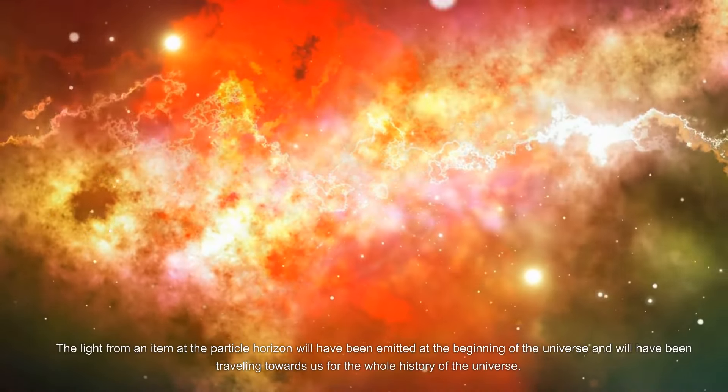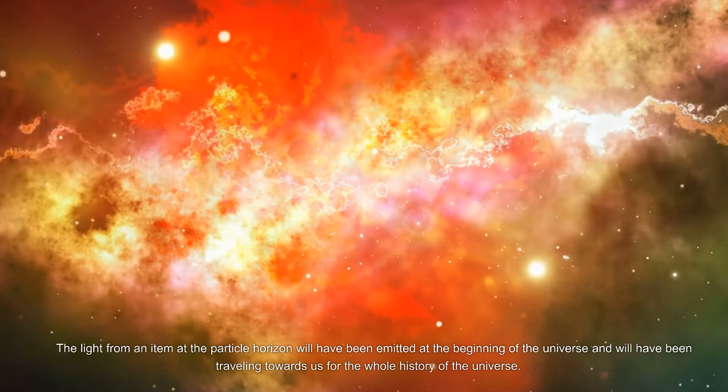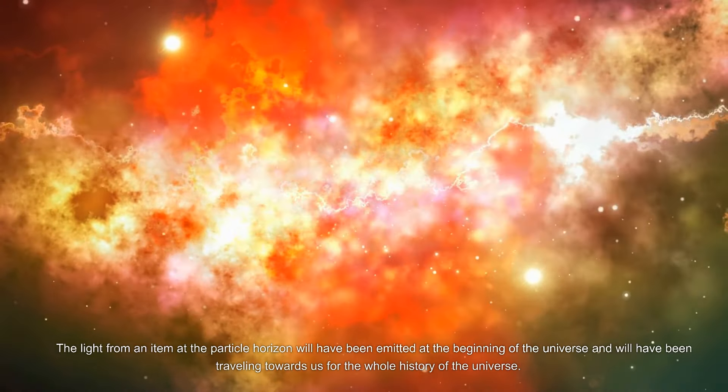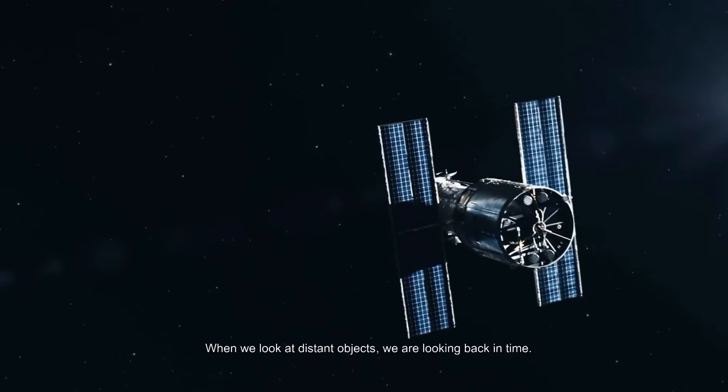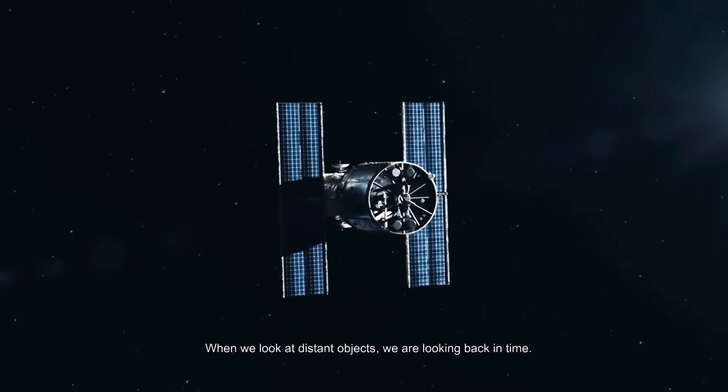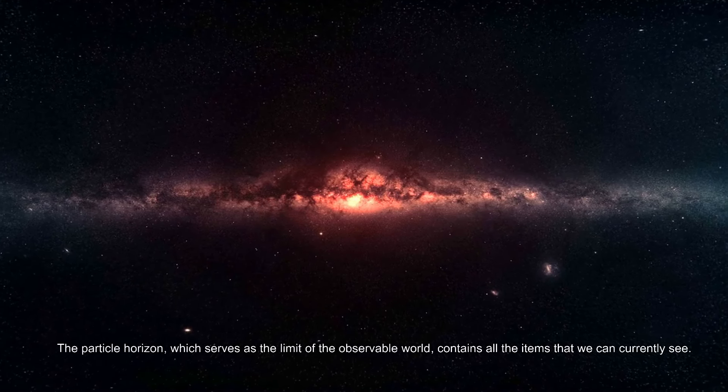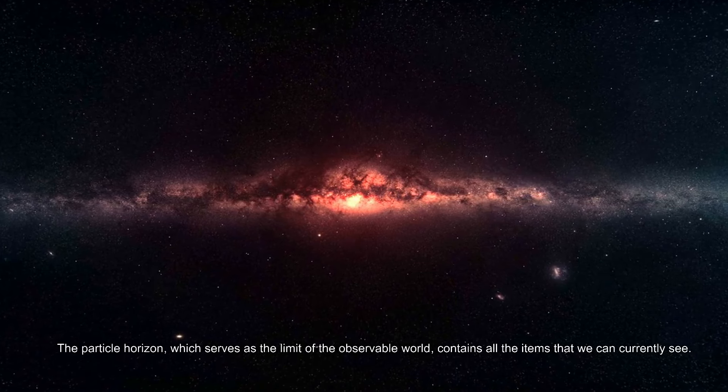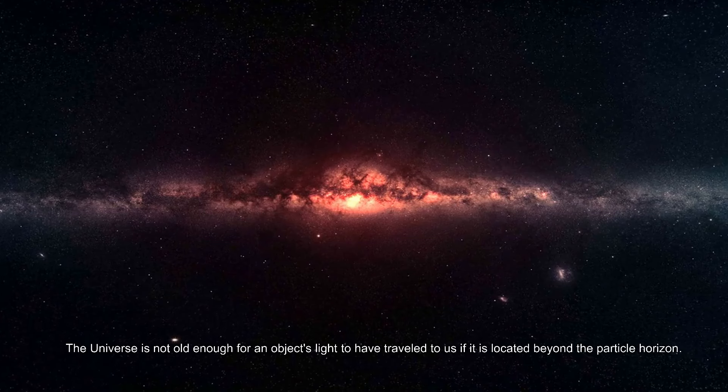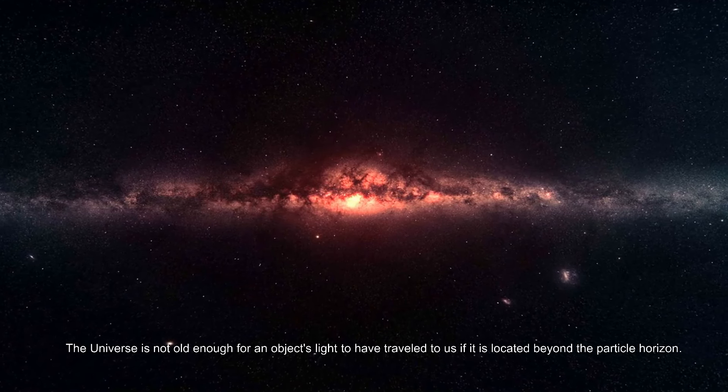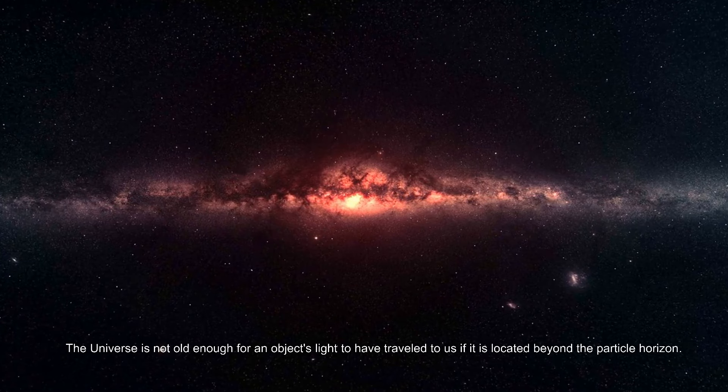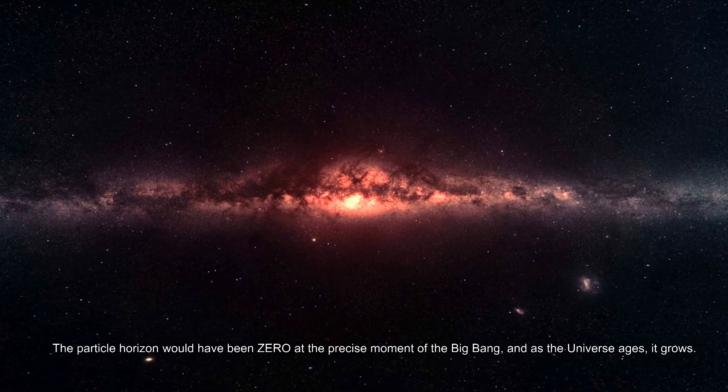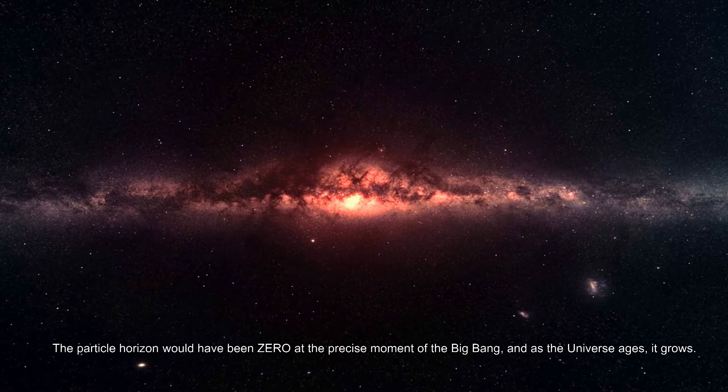The light from an item at the particle horizon will have been emitted at the beginning of the universe and will have been traveling towards us for the whole history of the universe. When we look at distant objects, we are looking back in time. The particle horizon, which serves as the limit of the observable world, contains all the items that we can currently see. The universe is not old enough for an object's light to have traveled to us if it is located beyond the particle horizon. The particle horizon would have been zero at the precise moment of the Big Bang, and as the universe ages, it grows.